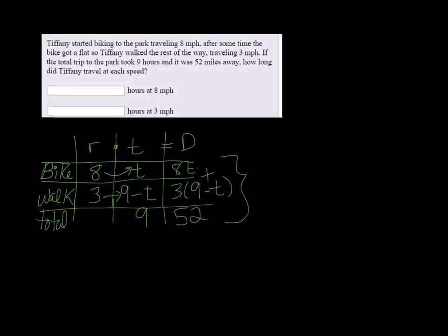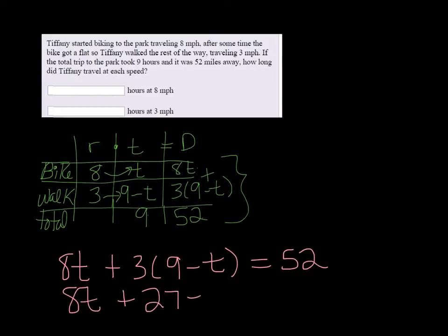What we have is 8T plus three times nine minus T equals fifty-two. So that's 8T plus twenty-seven minus 3T equals fifty-two.